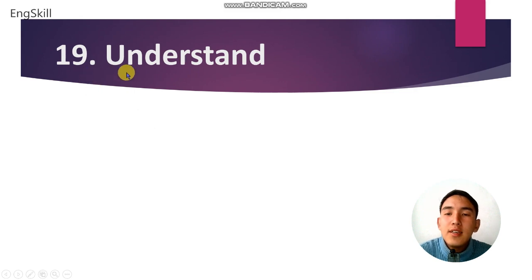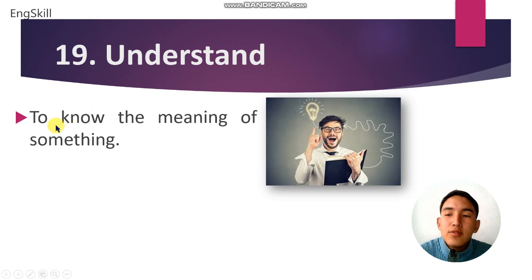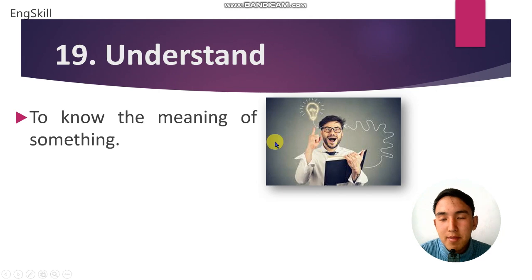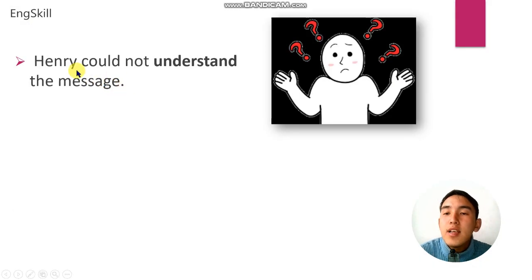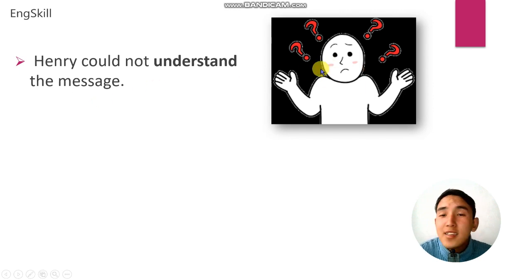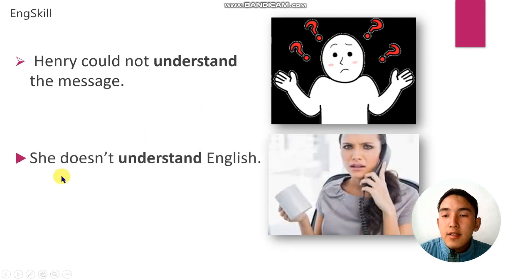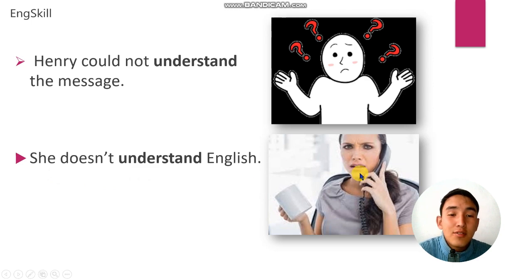Word number 19 is understand. Understand means to know the meaning of something. For example: Henry could not understand the message. Example number 2: she doesn't understand English.